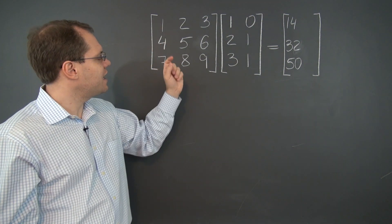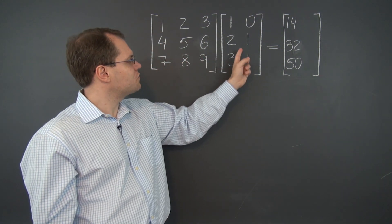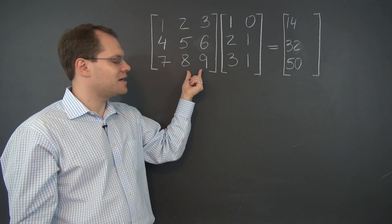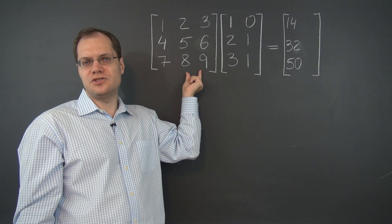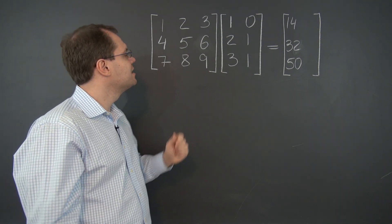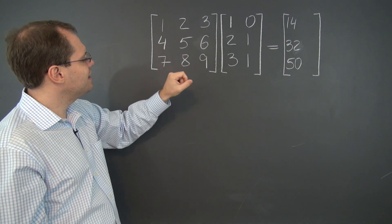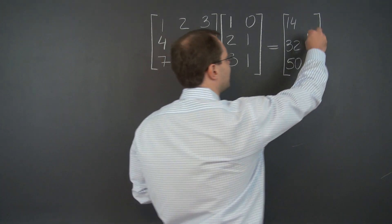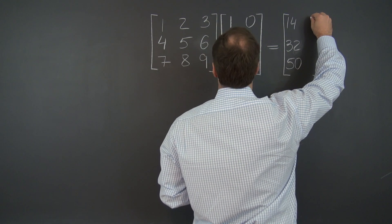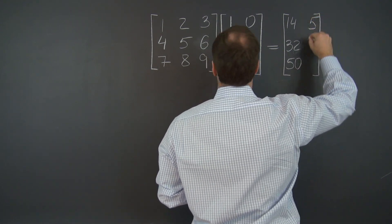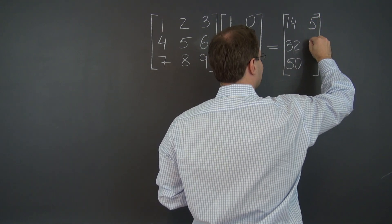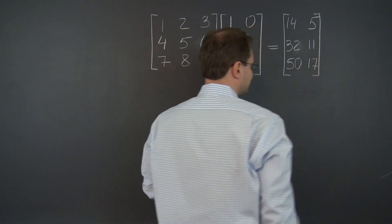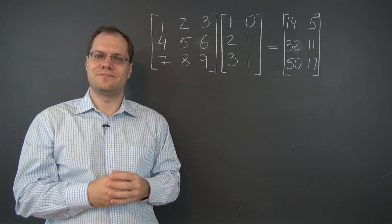The coefficients are 0, 1, and 1. So we simply have to find the sum of these two columns. And that sum is 5, 11, 17. So we're done.